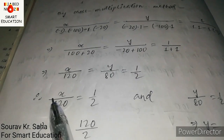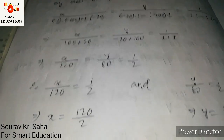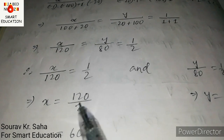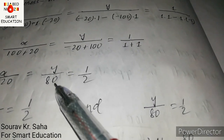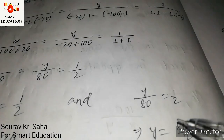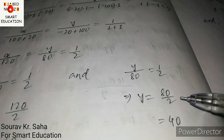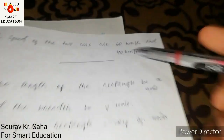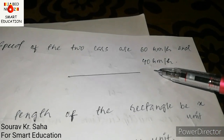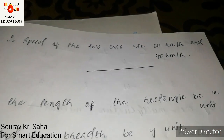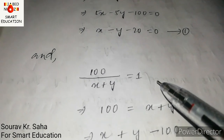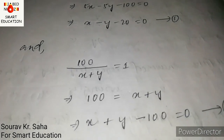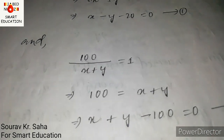From x by 120 equals 1 by 2: x equals 120 divided by 2 equals 60. From y by 80 equals 1 by 2: y equals 80 divided by 2 equals 40. So the speed of car A is 60 km per hour and the speed of car B is 40 km per hour.